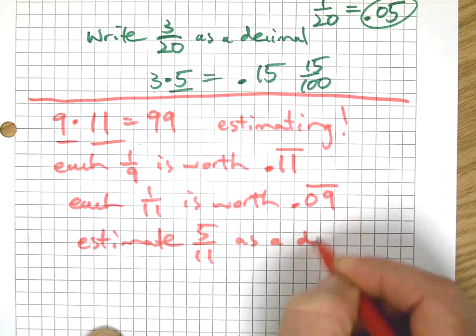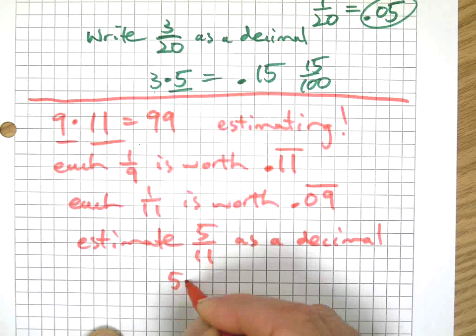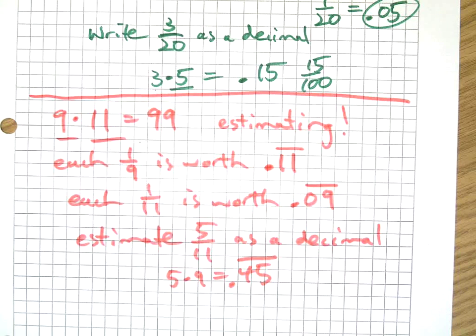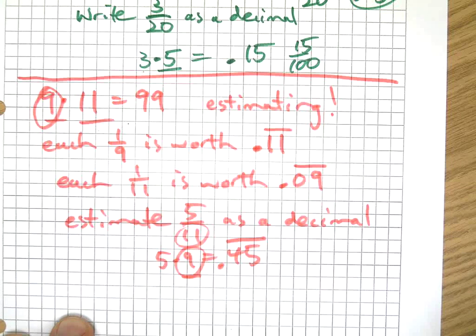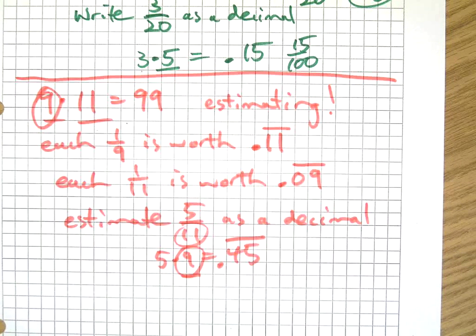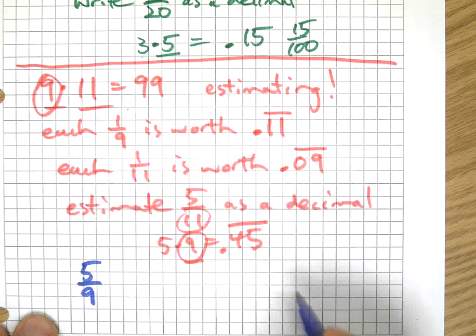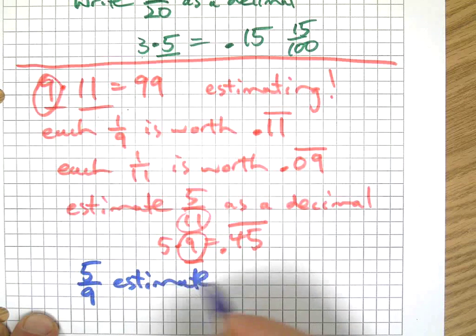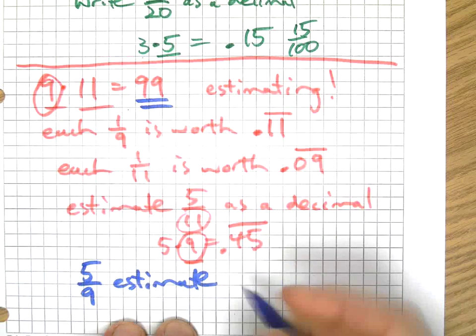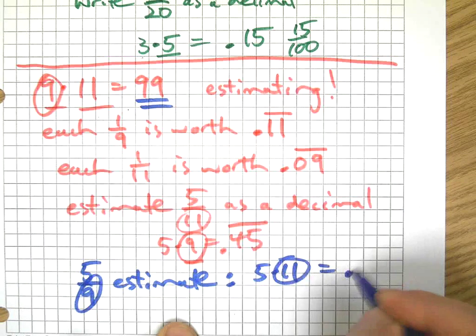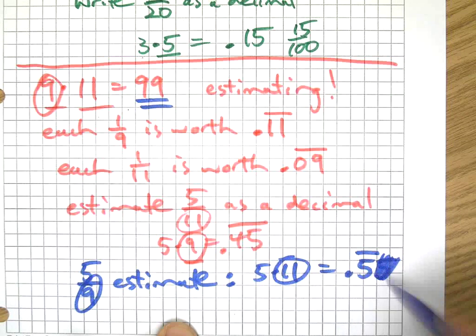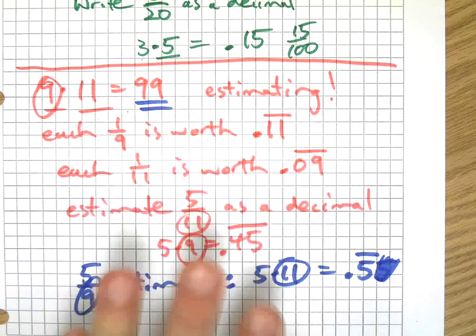So if we said something like estimate five-elevenths as a decimal, we would just go: five times nine is 45 repeating. Because I got the nine from here, knowing that nine and eleven have that relationship, I'm going to use the other number as a multiplier. Let's do one more: how about five-ninths? Estimate as a decimal. That's going to be five times eleven, because nine and eleven are the factors, so that's going to be 55, but the five is going to repeat.